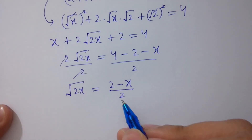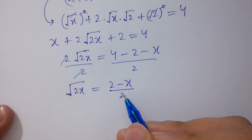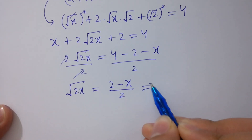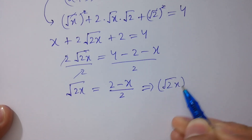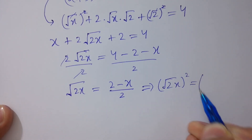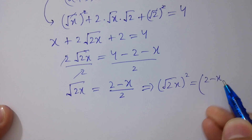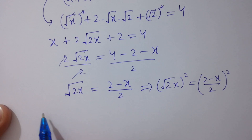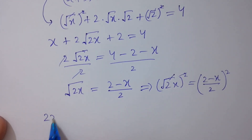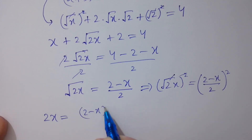In the next step, again take square on both sides. The square cancels from square root of x, giving 2x equals (2 minus x) squared over 2 squared.